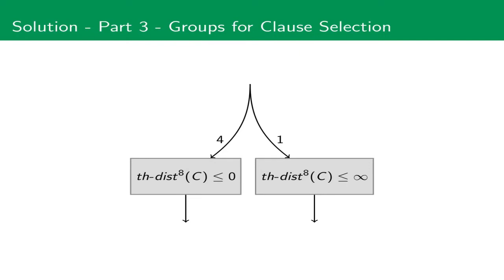Let's now look at how we can use this theory distance feature to derive a better clause selection heuristic. We consider different groups of clauses. On the one hand, we consider all the clauses where the theory distance is 0, so this is the group on the left side. On the other hand, we consider the group on the right side, which contains all the clauses where the theory distance is smaller or equal to infinity, which basically means all clauses. We then alternate between picking clauses from the left group and from the right group using some ratio, in this case 4 to 1. After we have picked the group we want to select from, we use the existing clause selection heuristic to select from the clauses of this group.